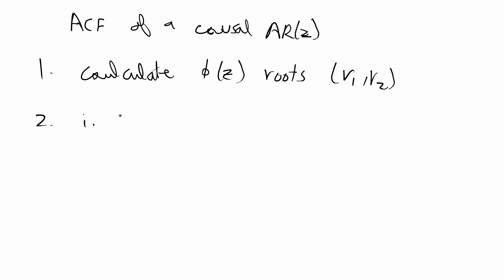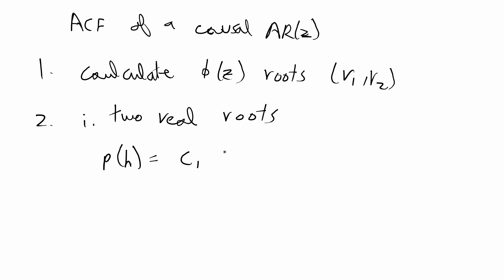In the first case, R1 and R2 can be two distinct real roots. If you have two real roots, the autocorrelation function is going to be: c1 times z1 to the negative h, plus c2 times z2 to the negative h.